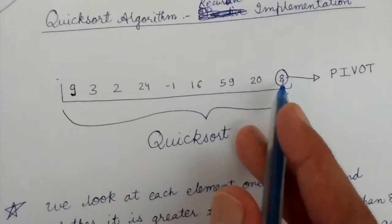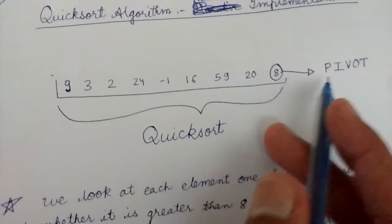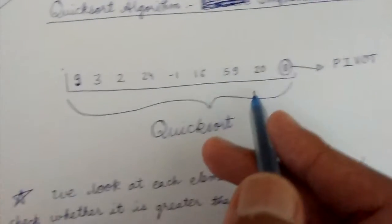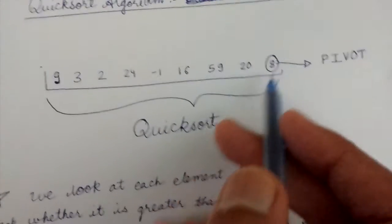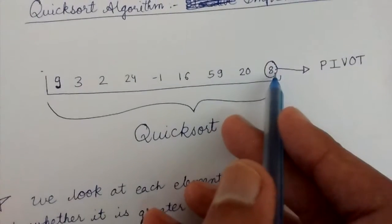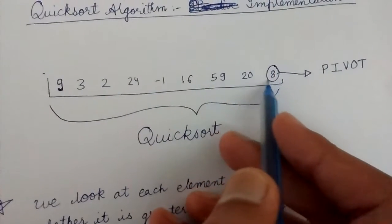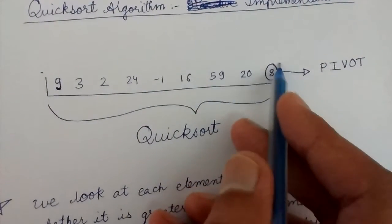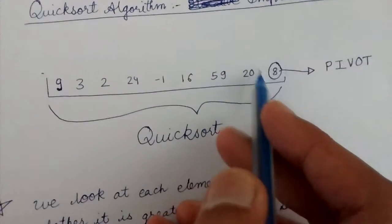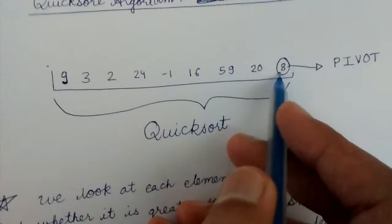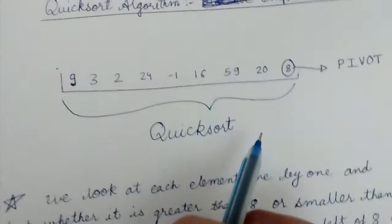First of all, we need to choose a pivot element. The general choice for the pivot element is the last element. So we choose 8 as the pivot element.